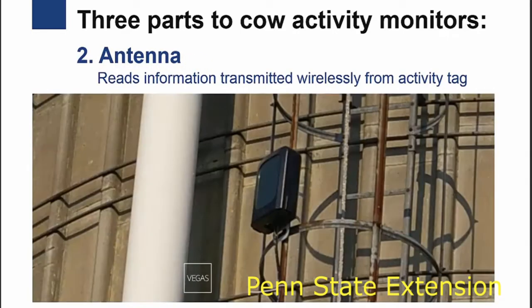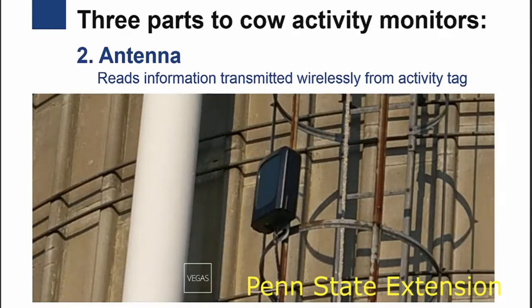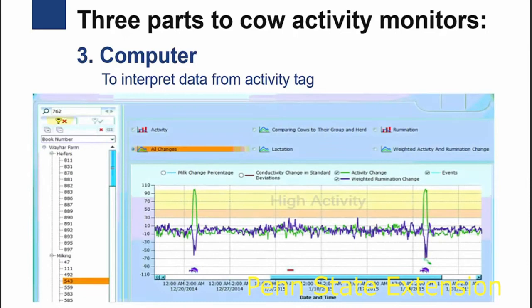The second part, an antenna, which reads information transmitted wirelessly from the activity tag. And then the third part, which is a computer or other device that is used to interpret the data from the tag and present it to the farmer.